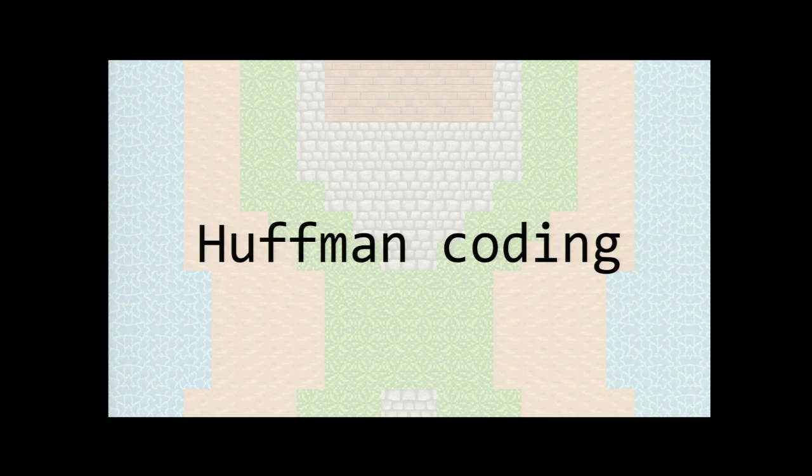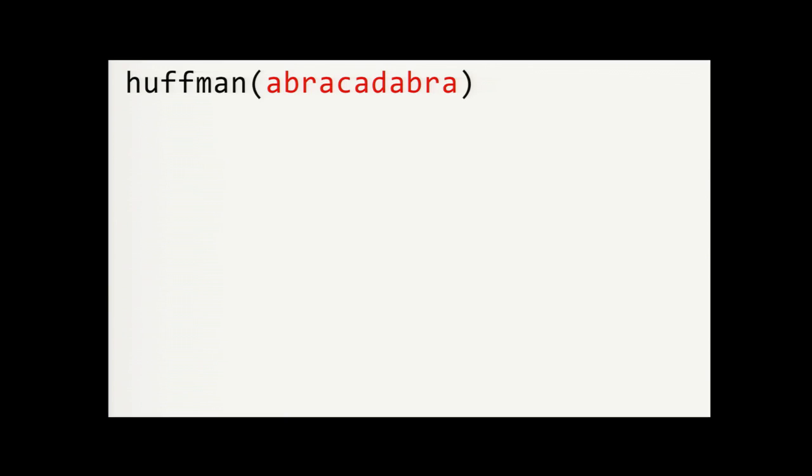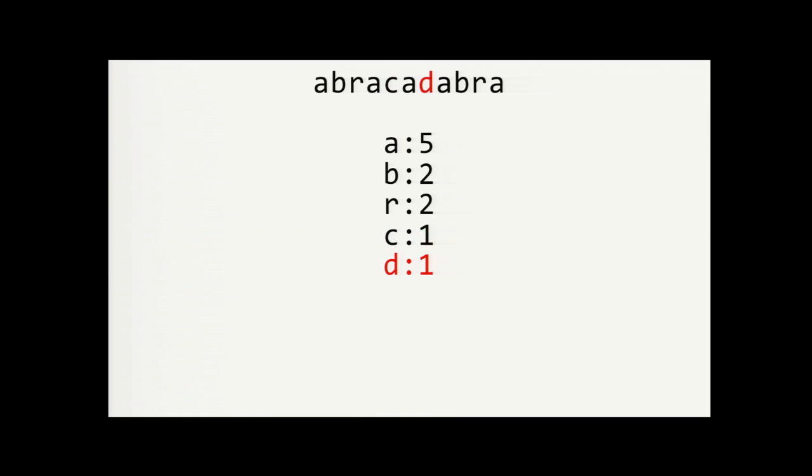One popular type of actual entropy coding is Huffman coding. It was discovered in 1952 by David Huffman, a PhD student at MIT. So let's just work through an example. The first step in Huffman coding is to count the frequency of each symbol. So there are five A's, two B's, two R's, one C, and one D.